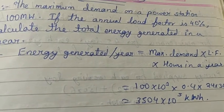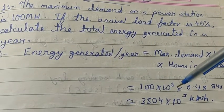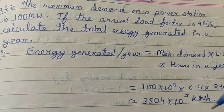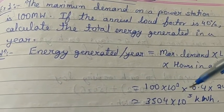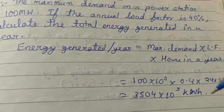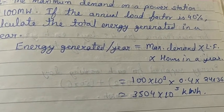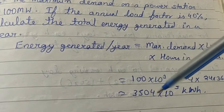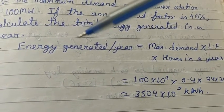So we have all the values given. Maximum demand is 100 megawatt, which we convert to kilowatt as 100 × 10³ kilowatt — because we need energy generated per year in kilowatt-hours. Load factor was given as 40%, so that becomes 0.4, multiplied by hours in a year, which is 24 × 365. Multiplying all three gives 3504 × 10⁵ kilowatt-hours as energy generated per year.